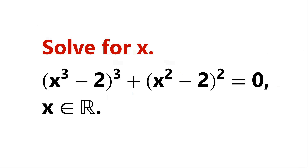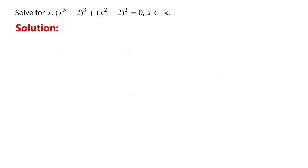Solve this polynomial equation, where x is a real number. By inspection, x equals 1 satisfies the equation. When x equals 1, the left-hand side of the equation equals 1 minus 2, all cubed.